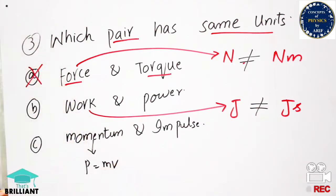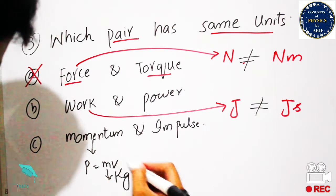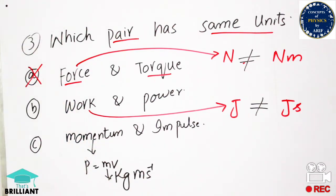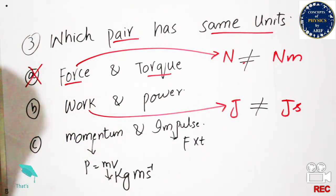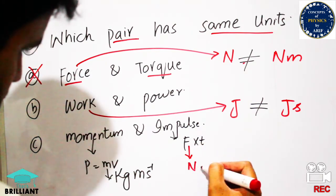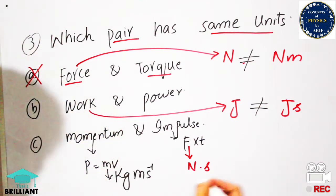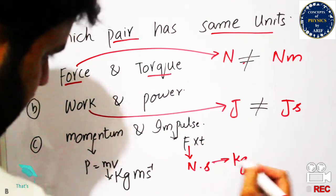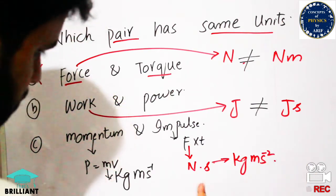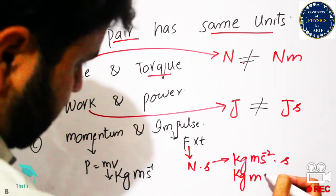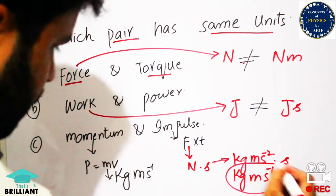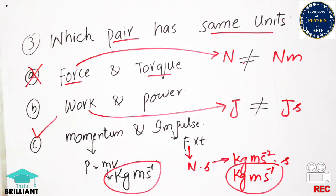Momentum has the formula p = mv. Mass has units of kilogram and velocity has units of meters per second, giving kg·m·s⁻¹. Impulse is force multiplied by time, which equals momentum. Force has units of Newton and time has units of seconds. Opening Newton: kg·m·s⁻² times second gives kg·m·s⁻¹, which equals the unit of momentum. This is the right answer.